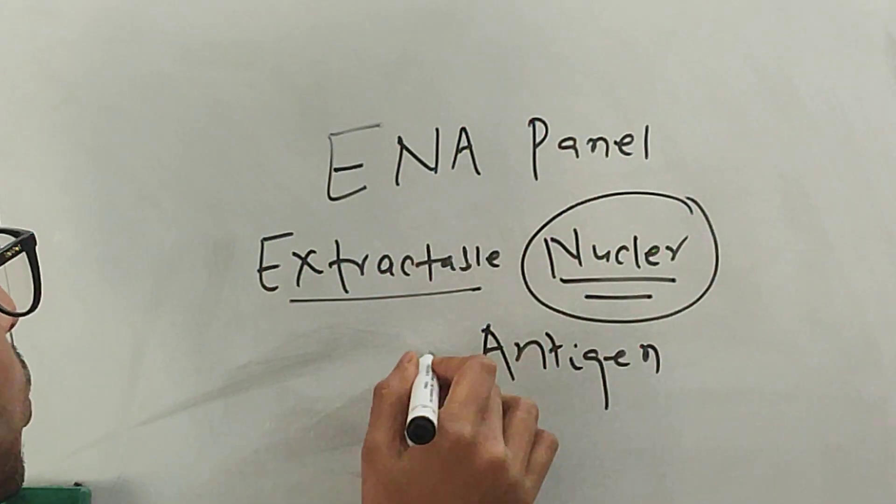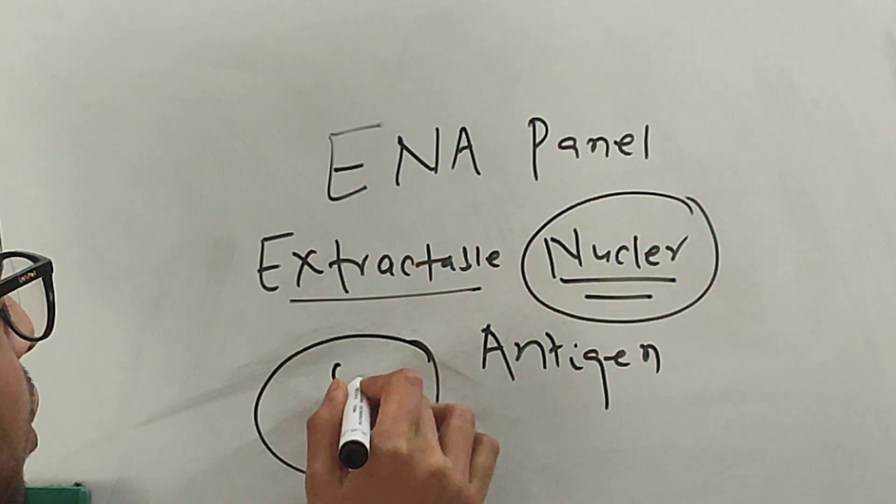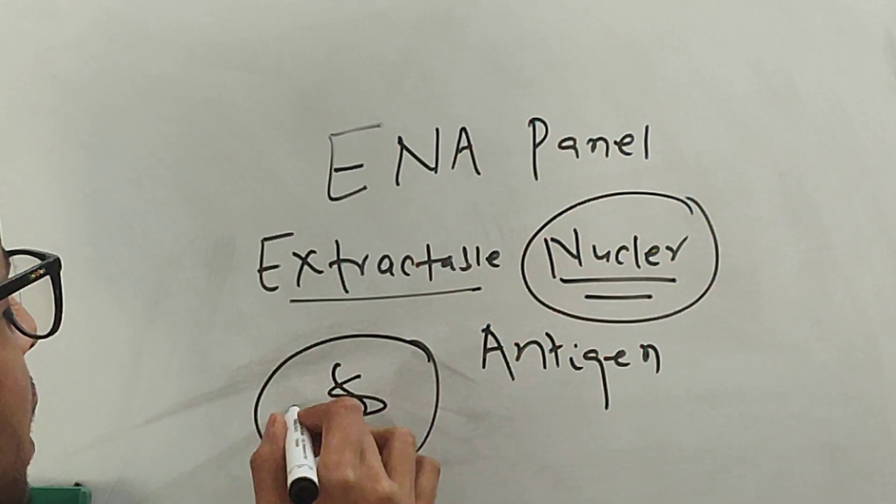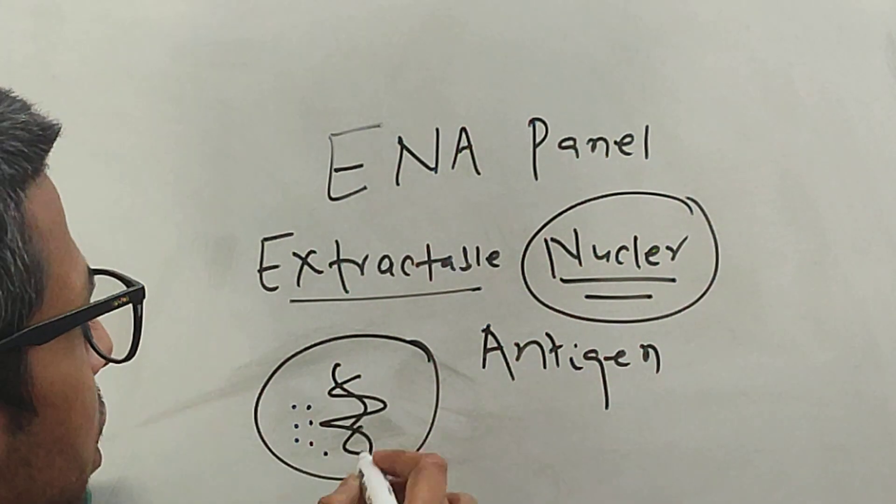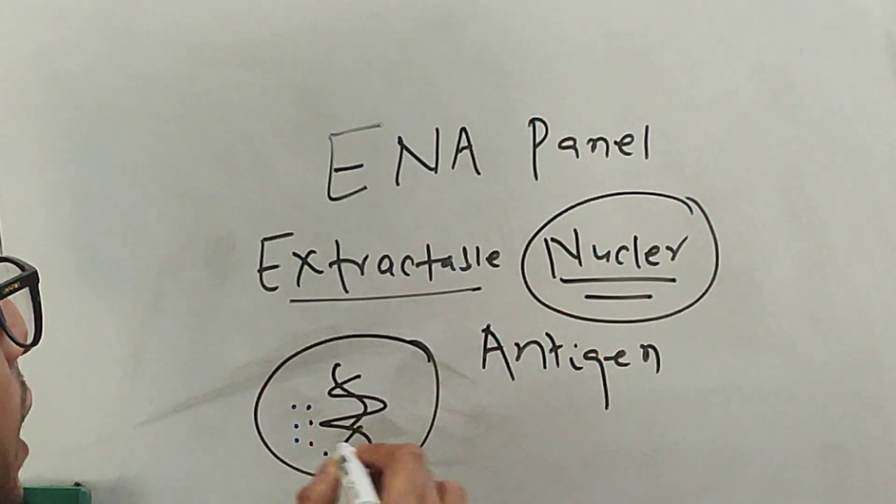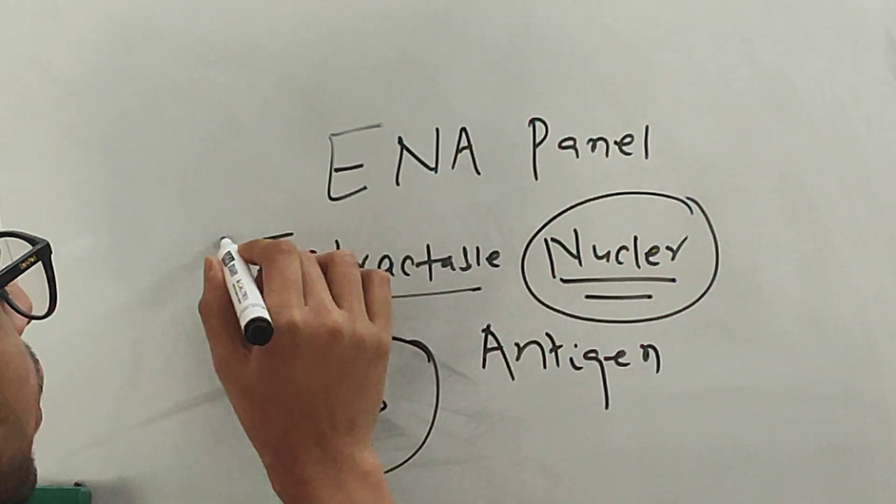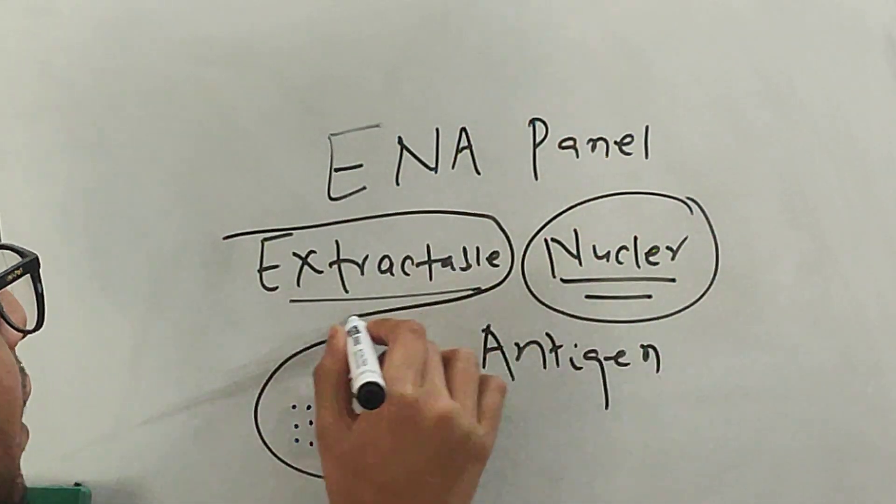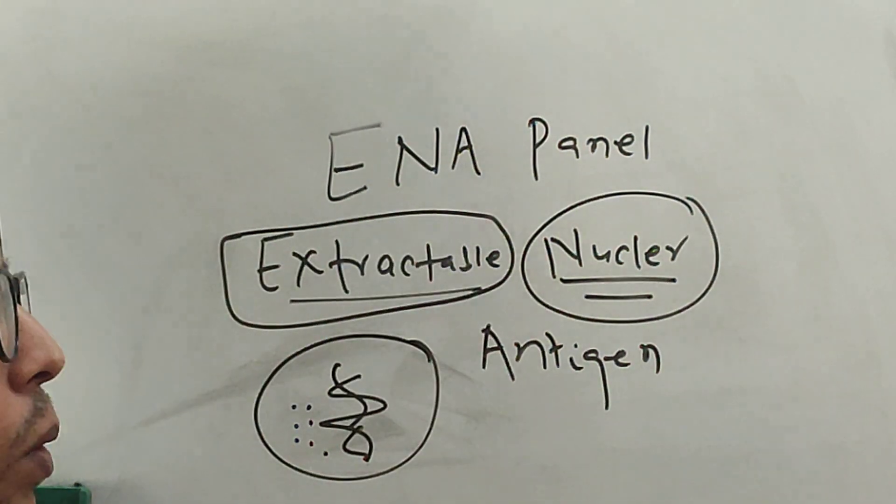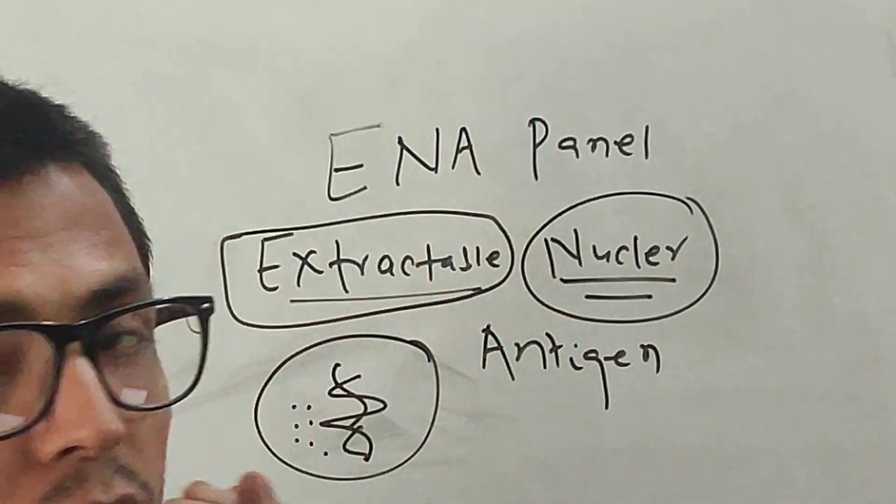Inside the nucleus there are components like DNA, SN, U1RNP, and a variety of other molecules. So it detects those antigens, and you might be wondering what this word extractable means. Let's talk about the history from where this word came.